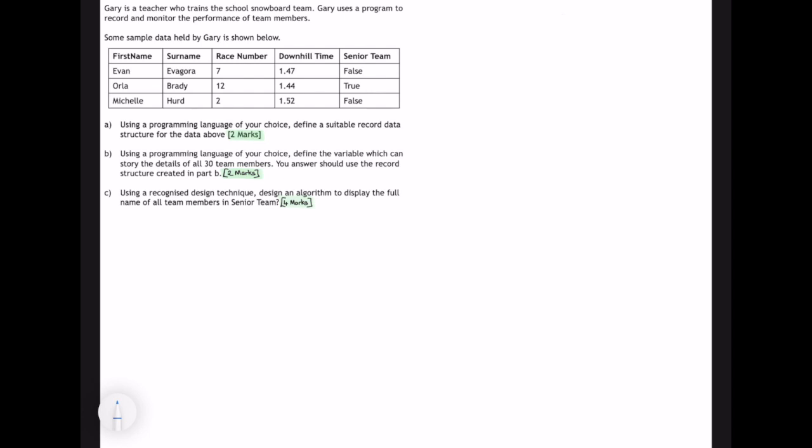Firstly, using a programming language of your choice define a suitable record data structure for the above data. Secondly, using a programming language of your choice define the variable which can store the details of all 30 team members. Your answer should use the record structure created in part B. And finally part C, using a recognised design technique, design an algorithm to display the full name of all team members in the senior team.